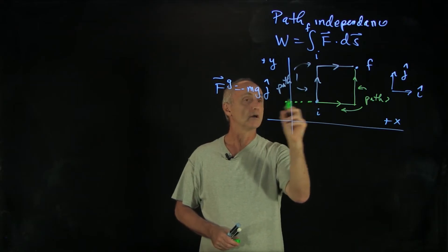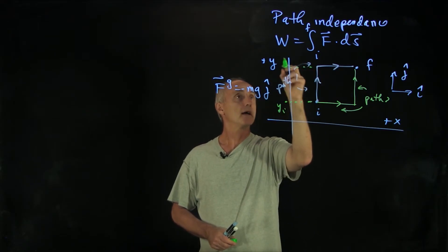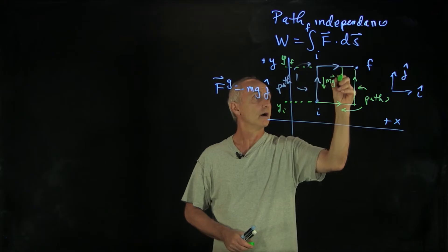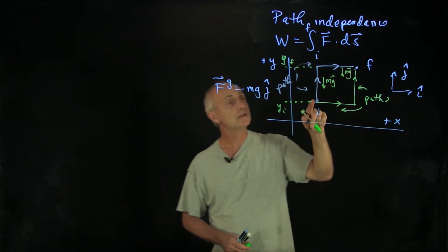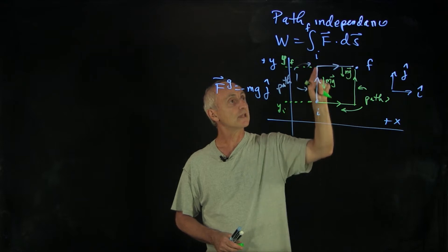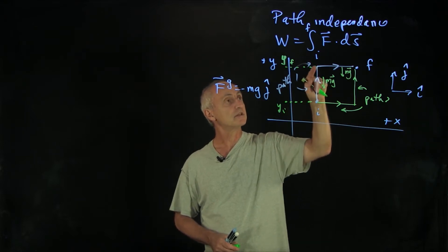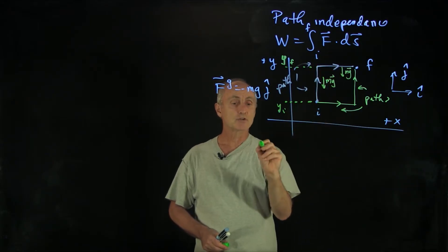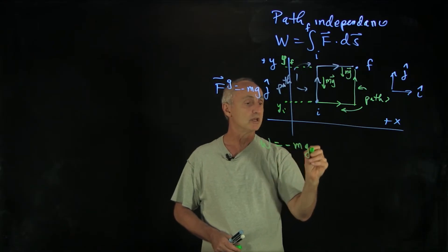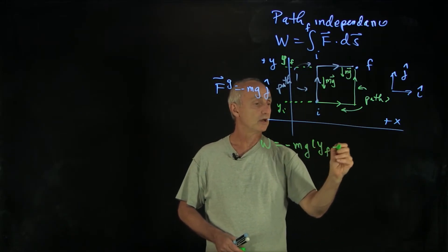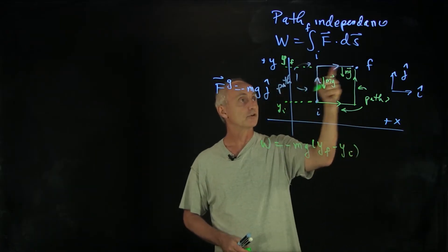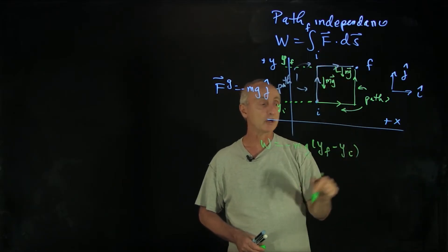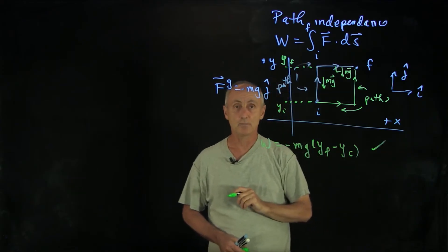Starting with path one: we label y initial and y final, and draw the gravitational force mg on both legs. When we do the integral along the first leg of path one, the gravitational force is opposite the direction of displacement, so the integral is negative. Since the force is constant, the work done is simply minus mg times delta y, which is y final minus y initial, on that first part. On the second part, it's a right angle, and because it's a right angle the dot product is zero. So that's the total work done on path one.